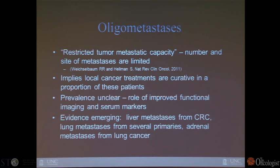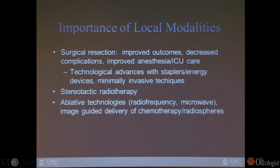There is evidence emerging in these fields. Prime examples include liver metastases from colorectal cancers, lung metastases from sarcomas and colon cancers, and adrenal metastases from lung cancers. As you can see, there are no medical oncologists on this panel — somewhat by design — because medical oncologists tend to be even more long-winded than we are, and we also didn't want to be clouded by evidence.